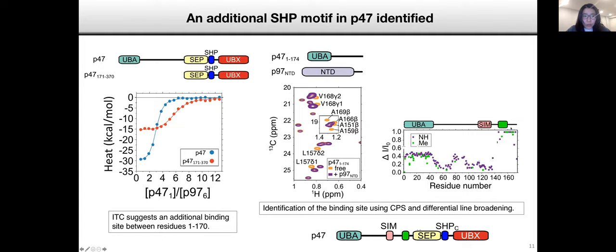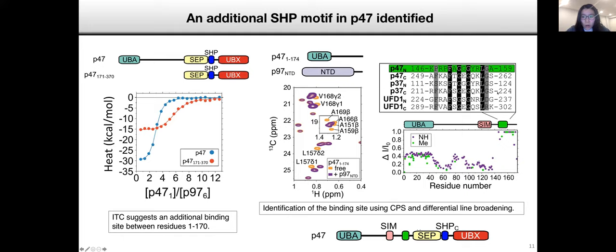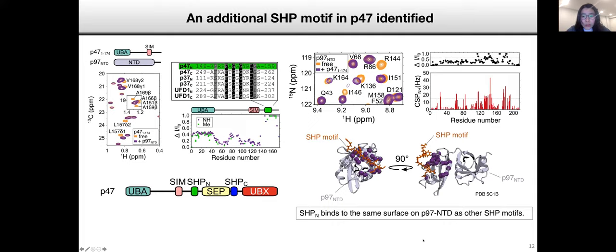Now, to study the interaction between P47 and P97, we used a shorter construct of P97 which contains only the NTD and D1. As previously reported, P47 interacts with P97 with its SHIP motif and the UBX domain, both binding to the NTD of P97. Interestingly, we discovered that these two are not the only binding sites. There is an additional binding site on P47 which can also bind to P97.